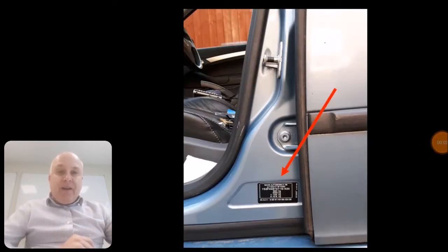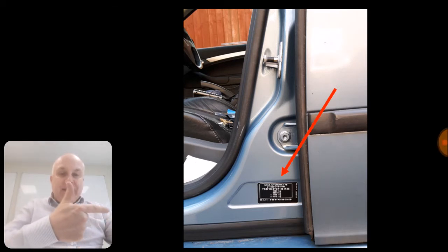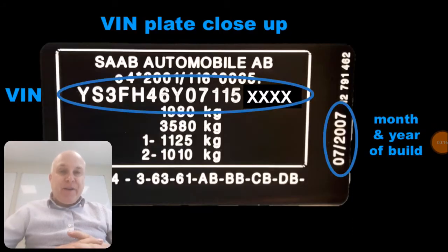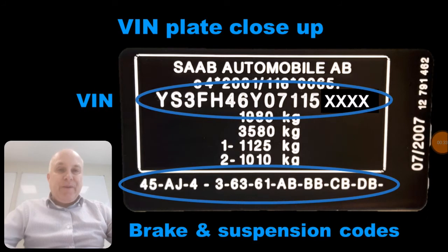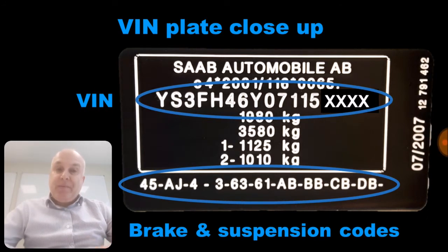If we go now to the car and open the front door, we can see that the car's VIN plate is at the bottom of the B pillar. Taking a closer look at the VIN plate, the VIN itself is on the third line and is a seven-digit code starting YS3F. Along the bottom of the VIN plate are ten alphanumeric codes making up the brake and suspension identifiers for the car.